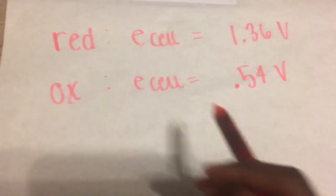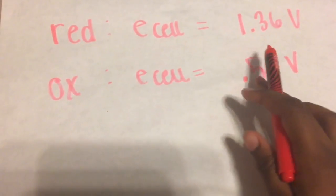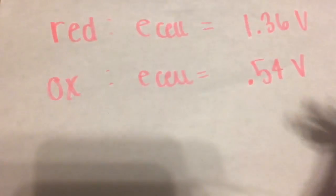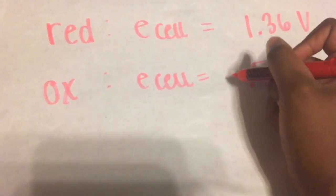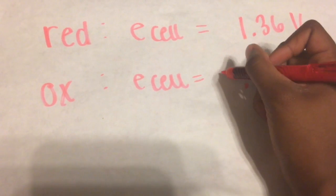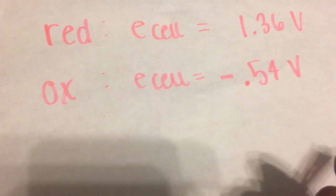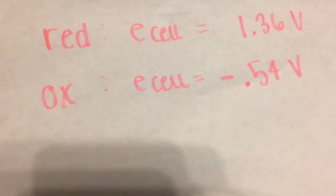However, since this one is oxidized, the iodine, we have to flip the reduction potential so that it is negative instead of positive. And if it was already negative, we would just go ahead and make it positive.